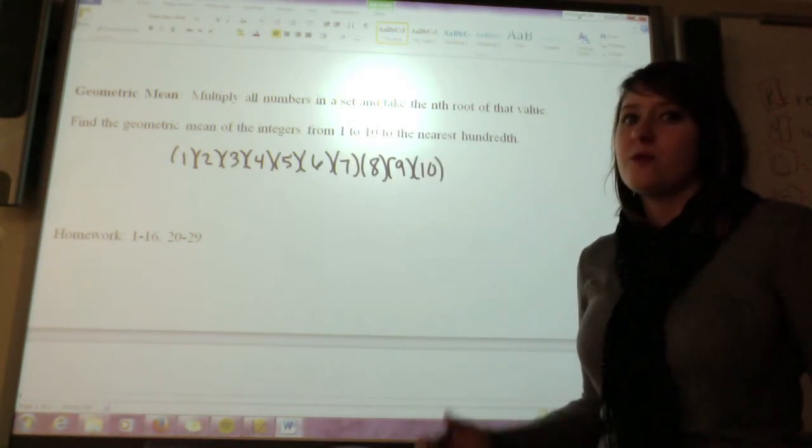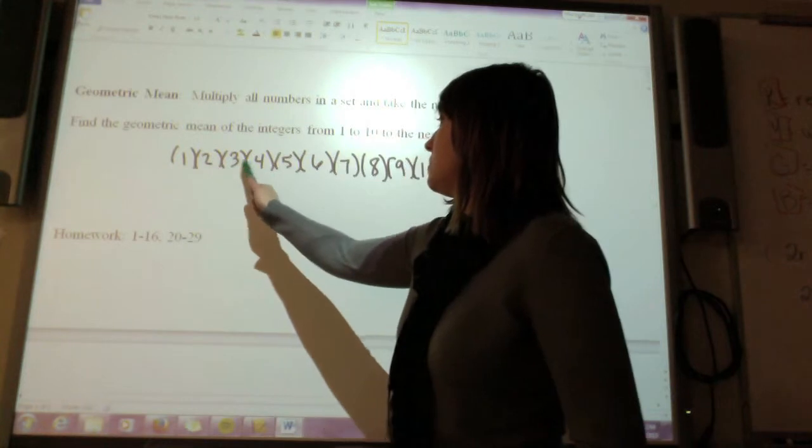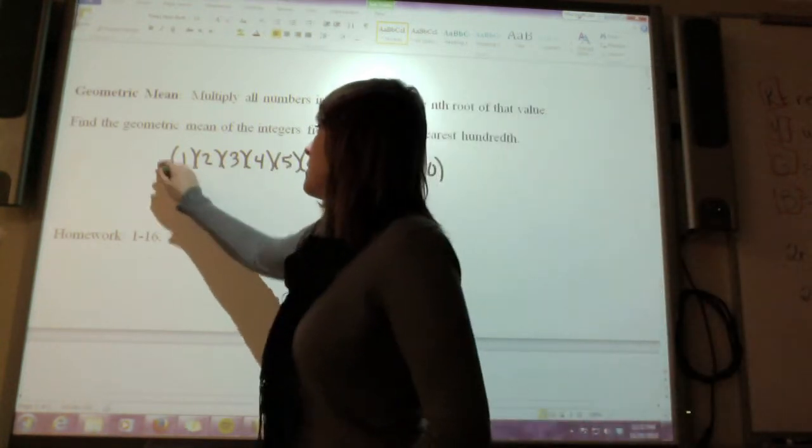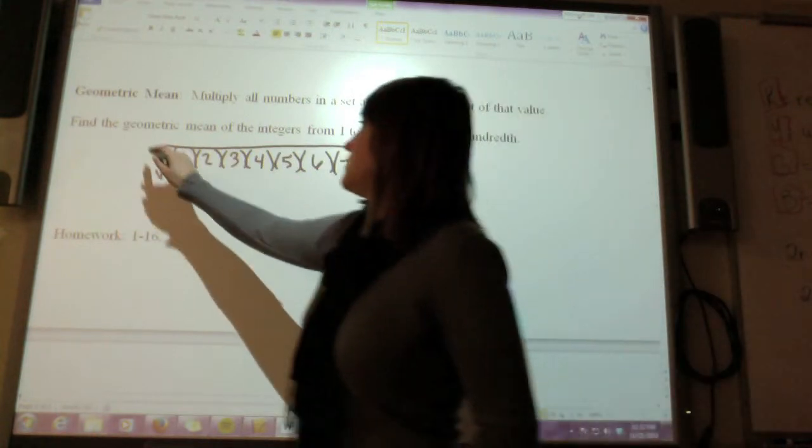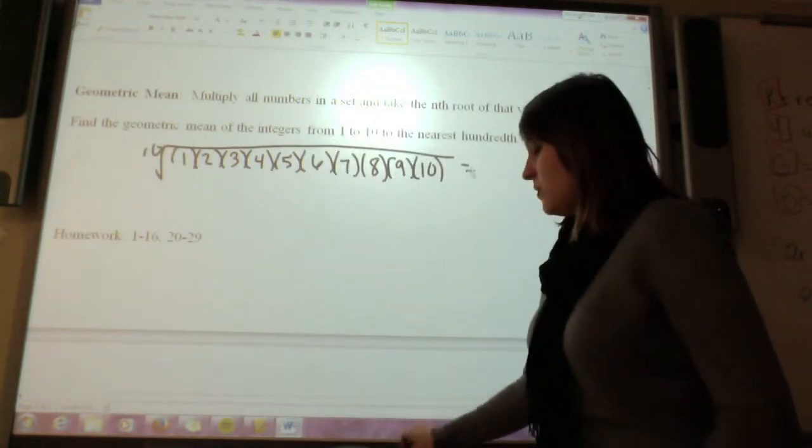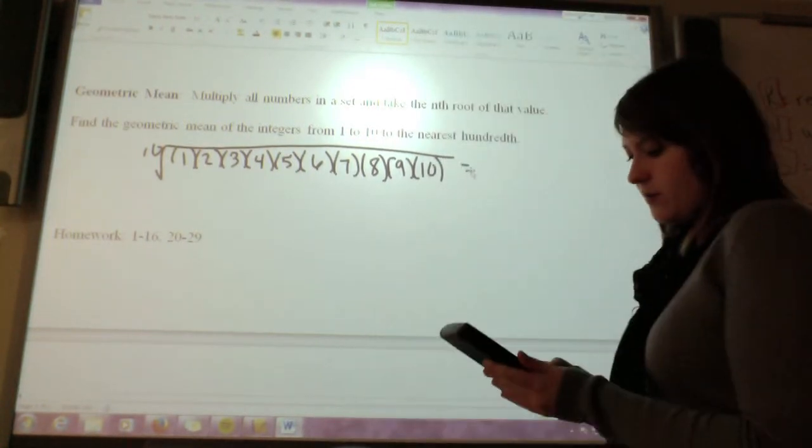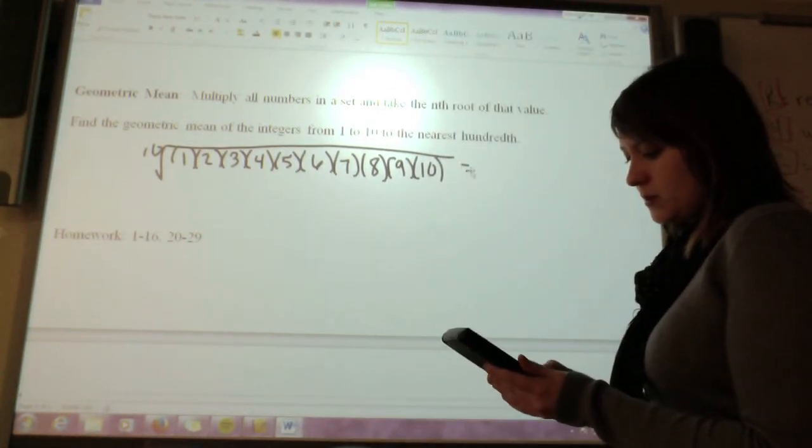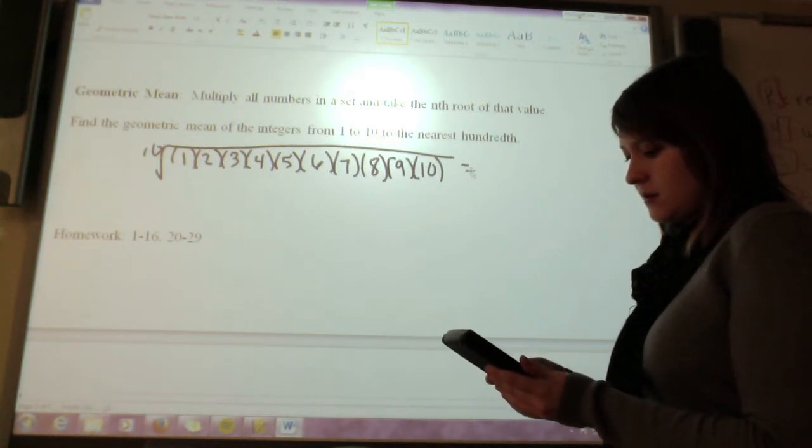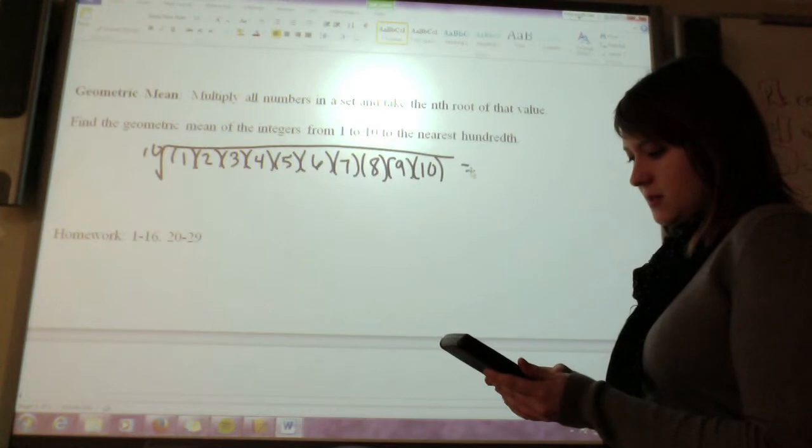Okay, then I'm going to take the nth root. So I have 1, 2, 3, 4, 5, 6, 7, 8, 9, 10 numbers. So that means I'm going to take the tenth root of that whole thing, and that's going to give me the geometric mean. So if I do that on my calculator, I've got 1 times 2 times 3 times 4 times 5 times 6 times 7 times 8 times 9 times 10.